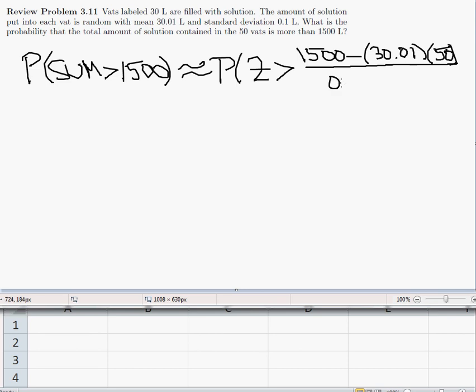Which would be 0.1 over... I'm sorry, I typed that in wrong. 0.1 times the square root of 50, because this is a sum problem.